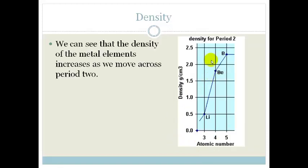Now let's look at the density across period 2. Now period 2 remember, a period is a row across the periodic table. So, if we look at this graph, we can see the density increases across period 2.